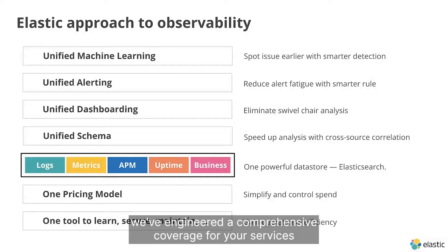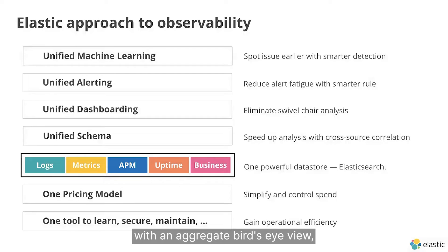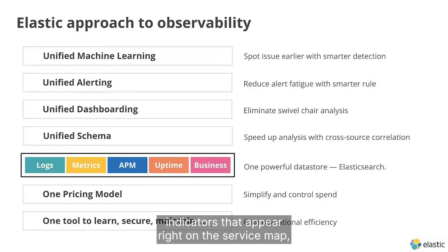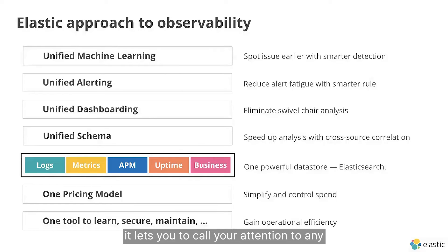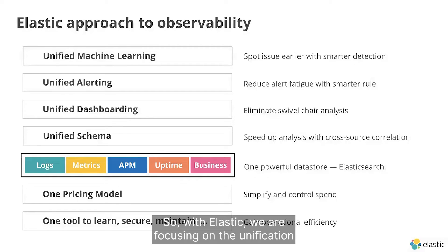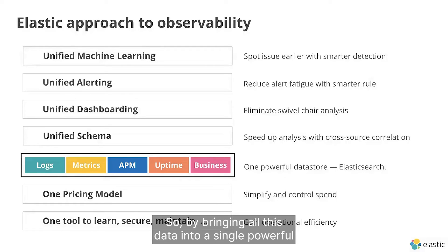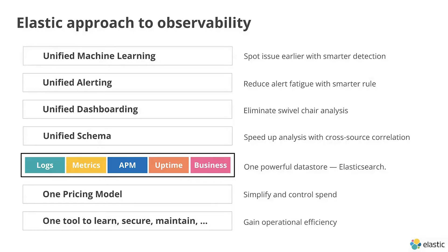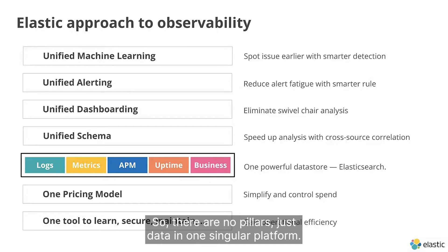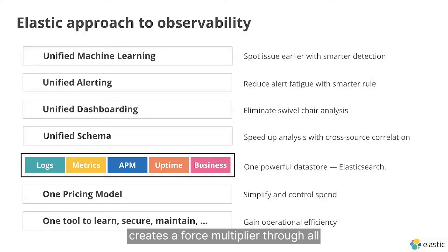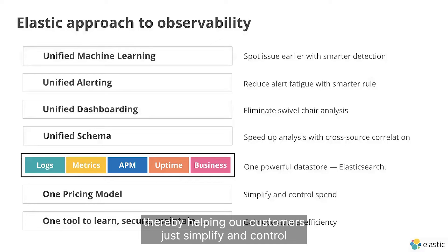Among core observability features, we have engineered comprehensive coverage for your services with the ability to see everything — starting with an aggregate bird's eye view via service maps where you can immediately see what's normal and healthy. Integrated machine learning-based health indicators appear right on the service map, calling your attention to any anomalies that need investigation. With Elastic, we focus on unification at the deepest level — the data layer — bringing all data into a single powerful data store, Elasticsearch. There are no pillars, just data in one singular platform, creating a force multiplier through all layers of exploration and analysis, helping customers simplify and control spend with our resource-based consumption pricing model.